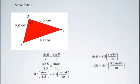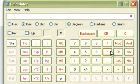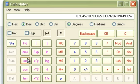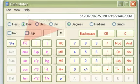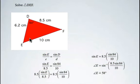So that means angle E equals the inverse sine of 8.5 times sine of 84 divided by 10. So we'll open a bracket, and it's 8.5 times sine of 84 divided by 10. Close the bracket. And then we take the inverse sine. And we find that if we round to the nearest degree, angle E is approximately 58 degrees.